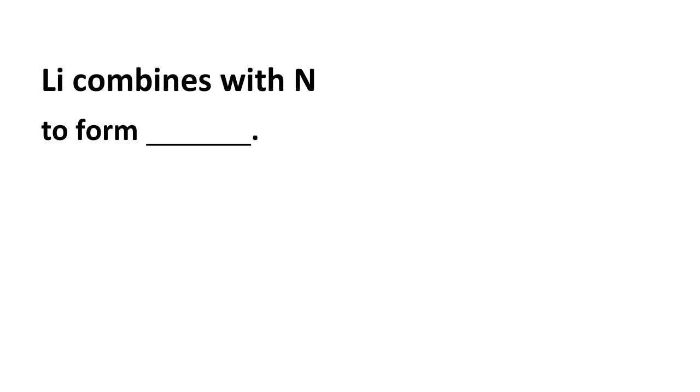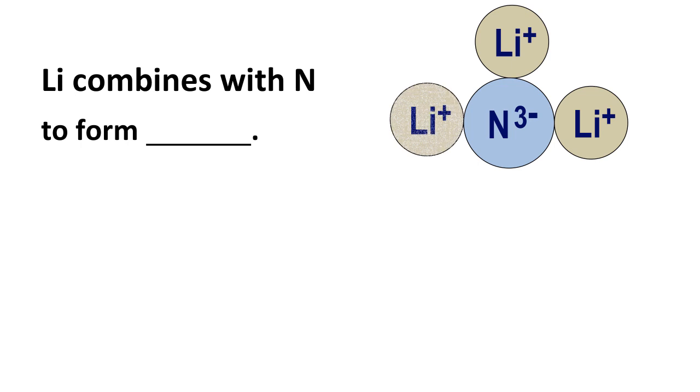If we look at what happens when lithium combines with nitrogen, lithium forms a plus one ion, it's an alkaline metal. Nitrogen forms a negative three ion. So it takes three positive one ions to balance one negative three ion. The compound formed is Li3N or lithium nitride.